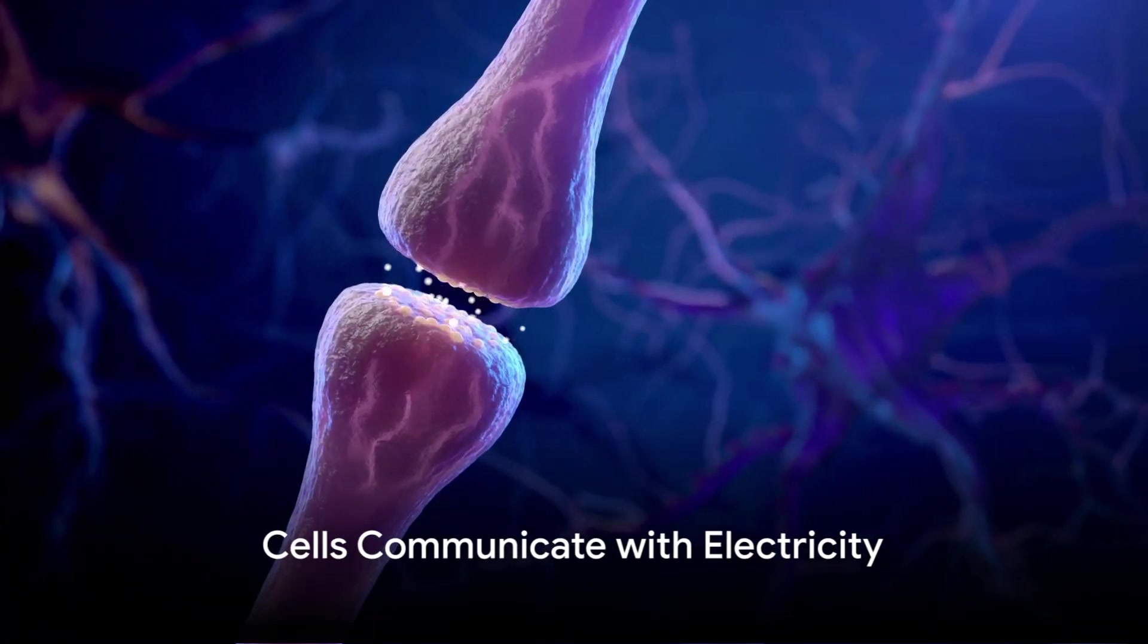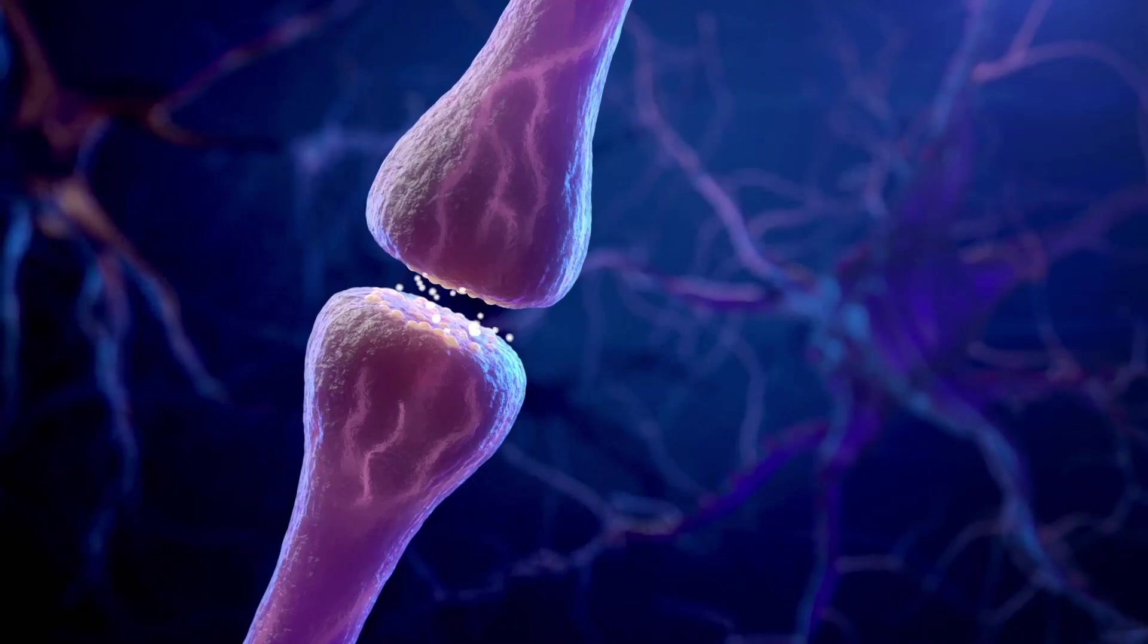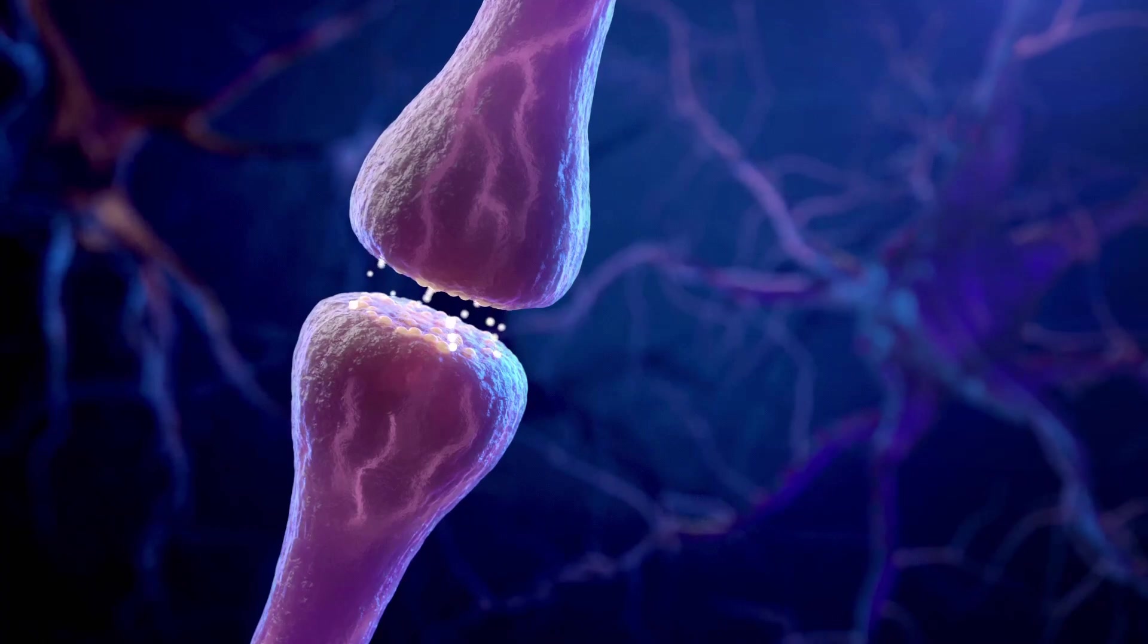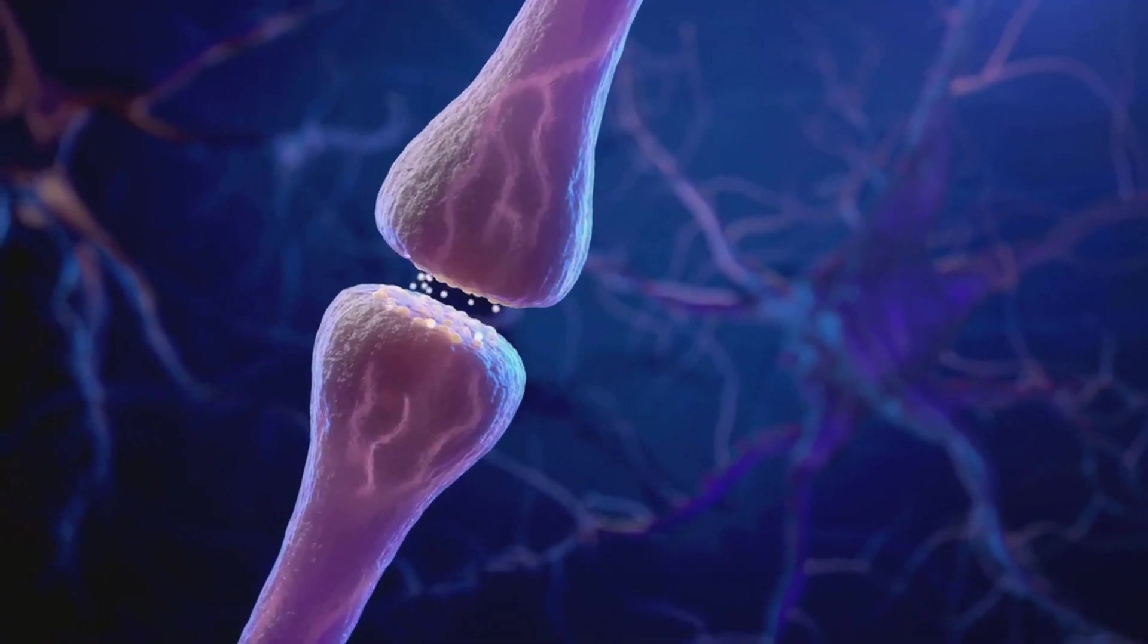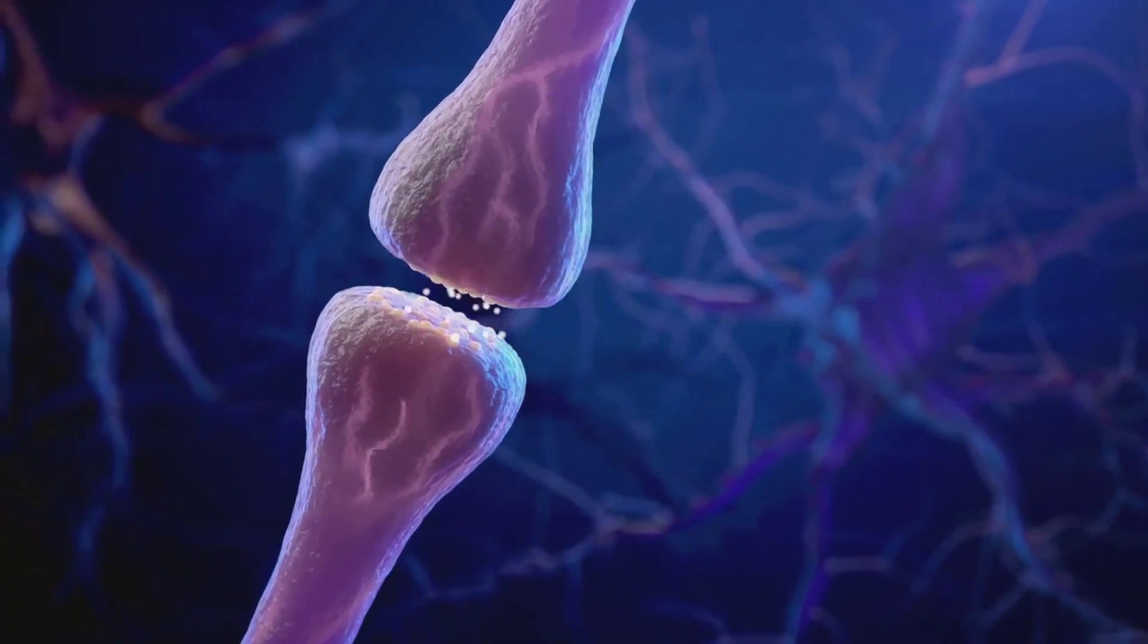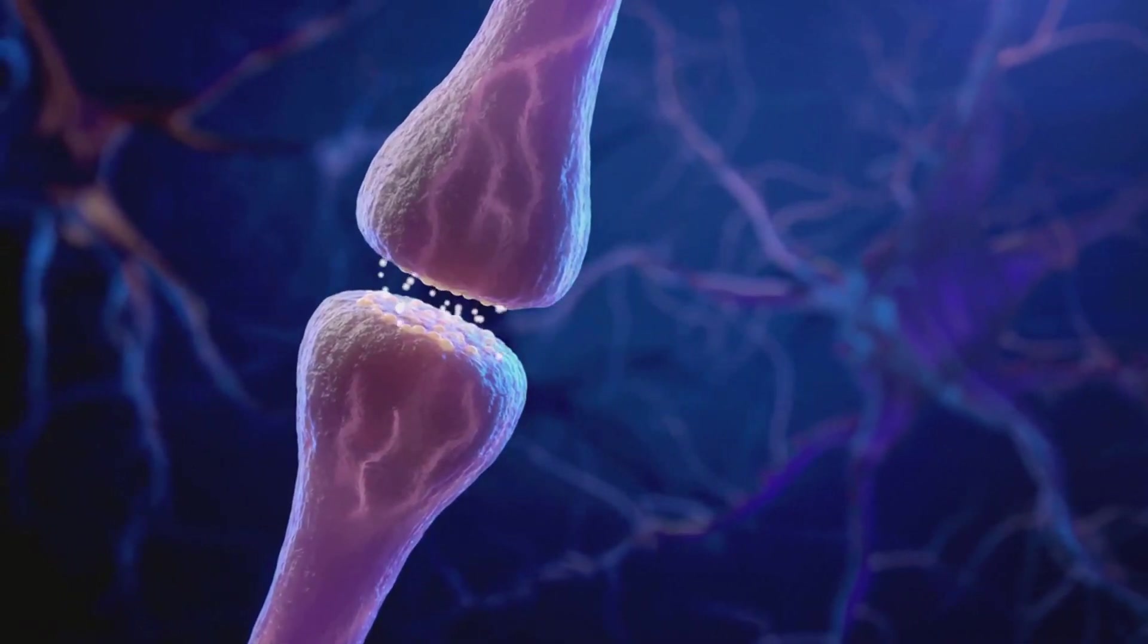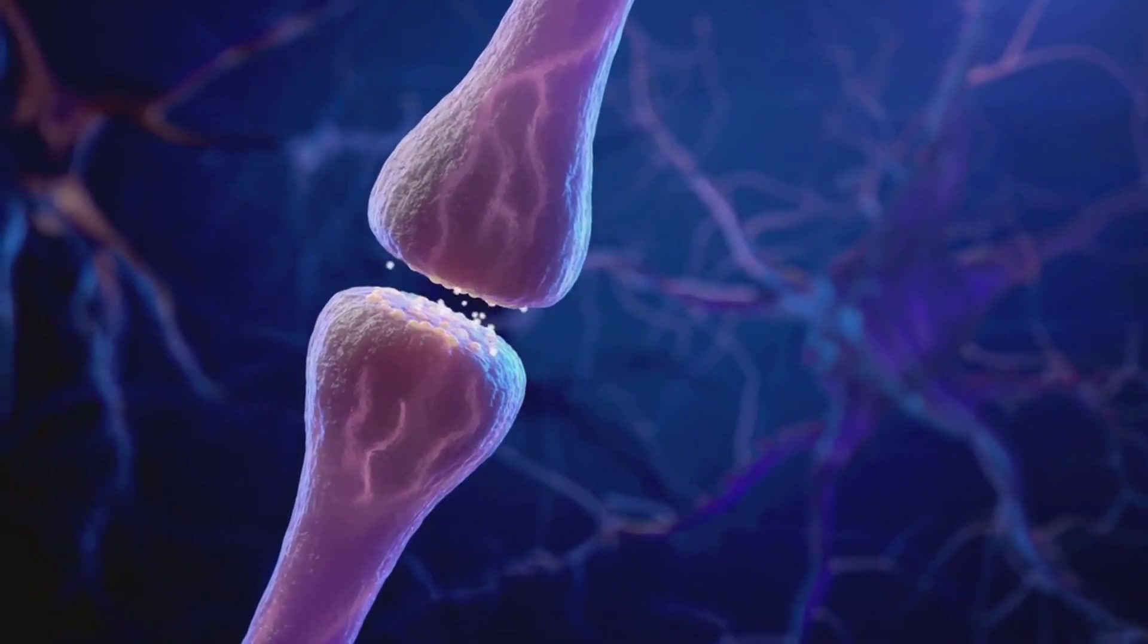Let's explore how cells use this electricity to communicate with each other. Imagine a bustling city with messages flowing in every direction. Now, replace that city with a single cell. An external influence, like a hormone, can cause a cell to open its ion channels to a stream of electrically charged ions. This is akin to opening the floodgates of a dam, allowing a torrent of information to rush in.